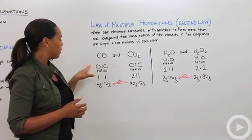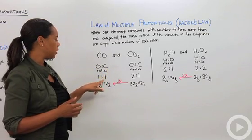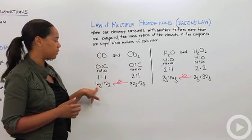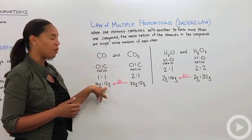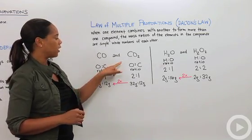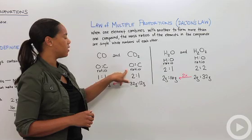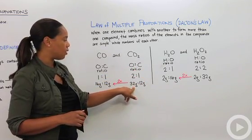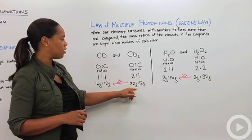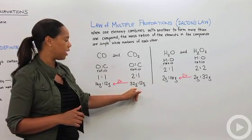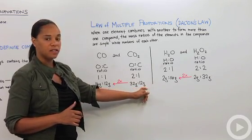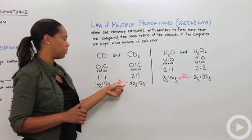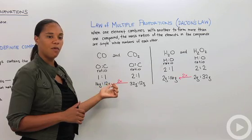In carbon monoxide, the oxygen to carbon ratio is one to one. The molar mass of oxygen is 16 grams and the mass of carbon is 12 grams. If we look at carbon dioxide, the oxygen to carbon ratio is two to one. That means there are two oxygens for every one carbon. So the mass of oxygen is 32 grams and the mass of carbon is still 12 grams. You see here that the ratios are exactly two times what it was for carbon monoxide.